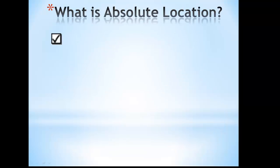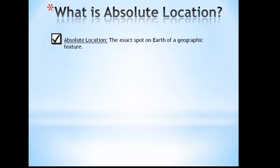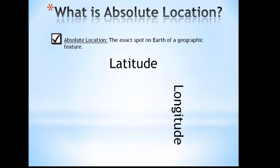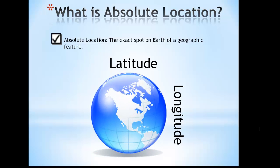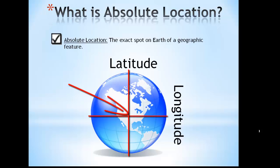Let's begin with the basics. What is absolute location? Absolute location is the exact spot on Earth of a geographic feature. Usually, this location is given using latitude and longitude coordinates. Latitude and longitude are imaginary lines that form a grid over the world. This imaginary grid helps people pinpoint exact locations on Earth, called absolute location.